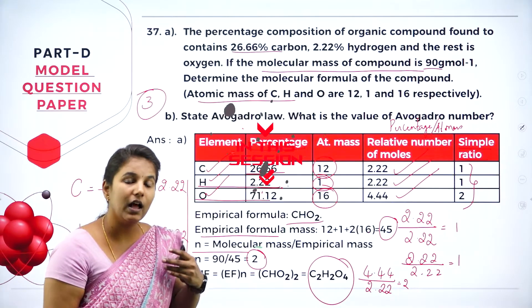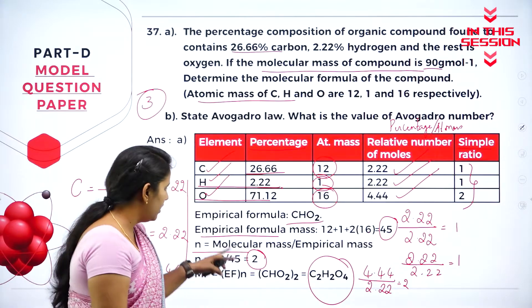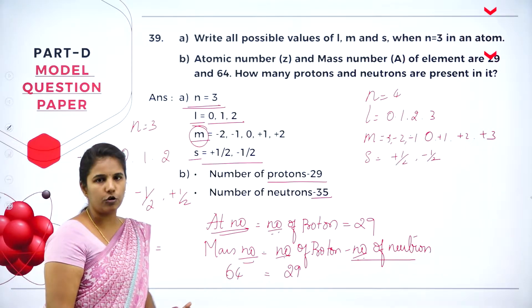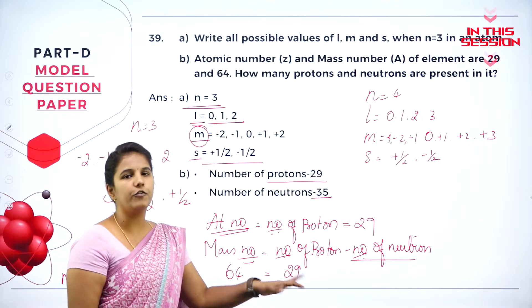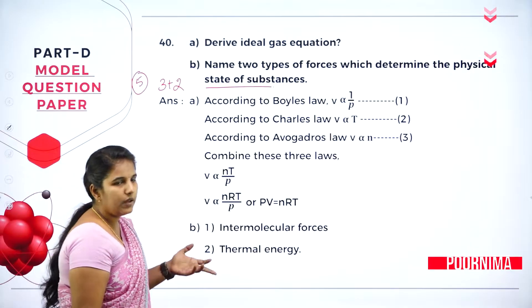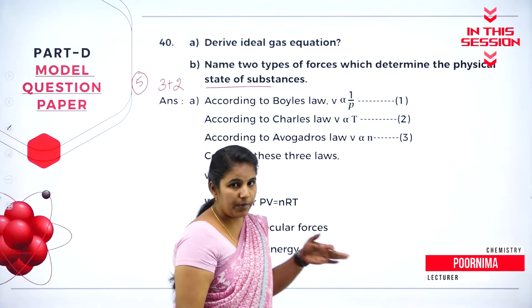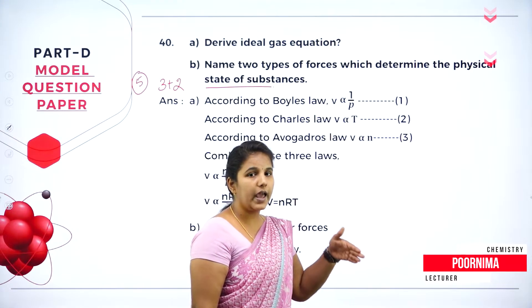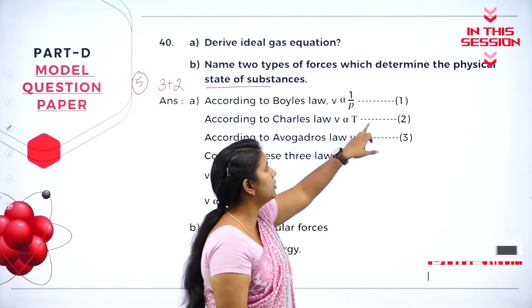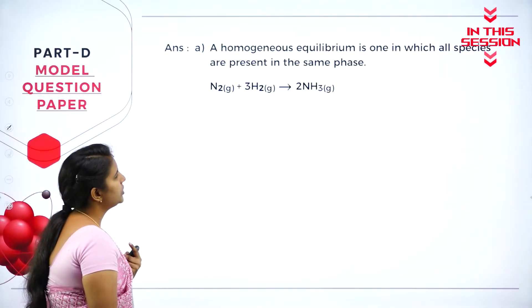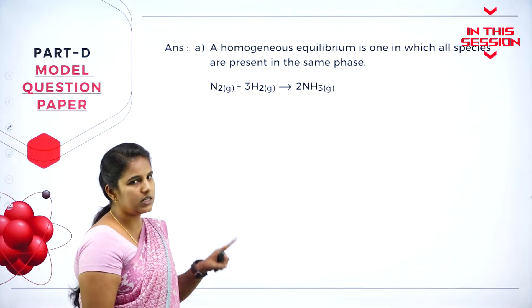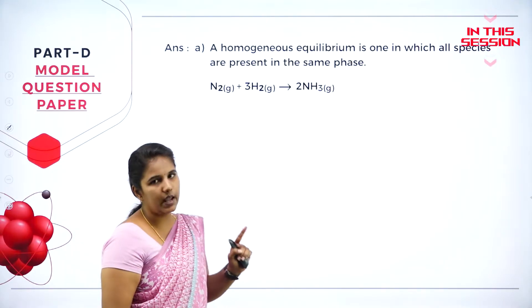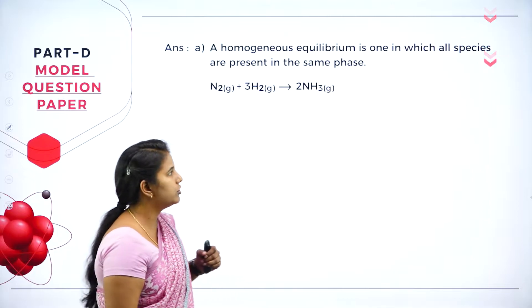Based on this numerical, they can also ask you to calculate the molecular mass. Atomic number is nothing but the number of protons, whereas mass number is nothing but the number of protons plus the number of neutrons. According to Boyle's law, if temperature is kept constant, the volume of the gas is inversely proportional to the pressure. Homogeneous equilibrium is one in which all the species — both reactant and product — are present in the same phase.